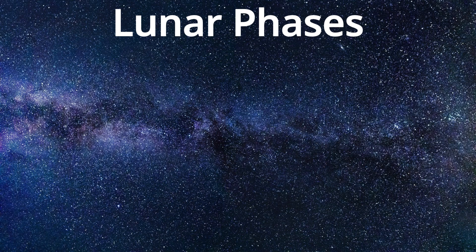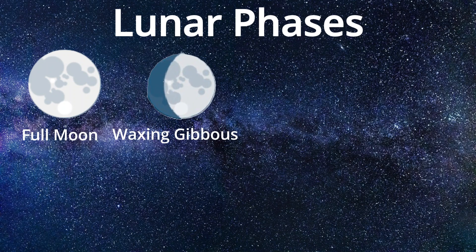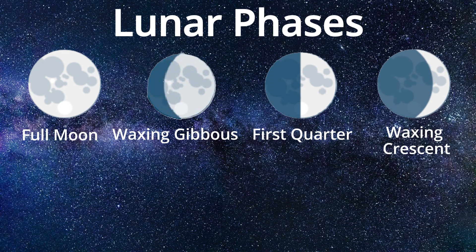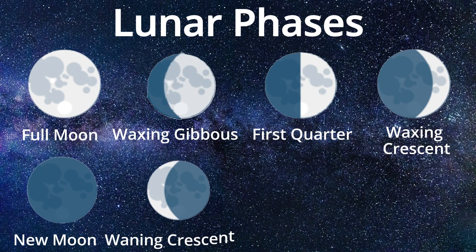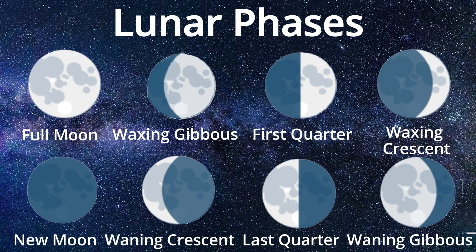These are the full moon, waxing gibbous moon, first quarter moon, waxing crescent moon, new moon, waning crescent moon, last quarter moon, waning gibbous moon, and then the cycle goes back and repeats itself.